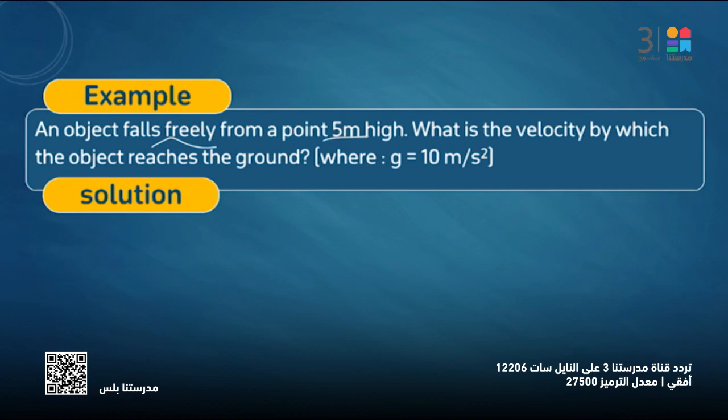Kinetic energy equals potential energy at maximum height. Potential energy at maximum height equals mgh, which then equals one-half m V squared. Find the velocity.